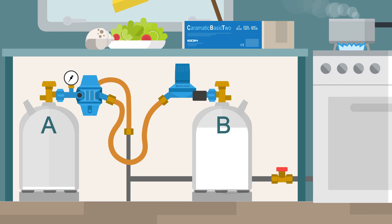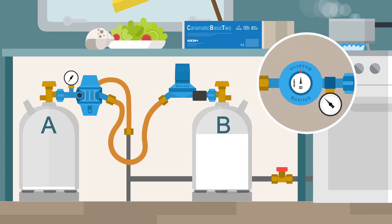The operator must now turn the rotary wheel on the changeover regulator from reserve to operation to change the empty bottle without interruption of ongoing operations and replace it with a full one.